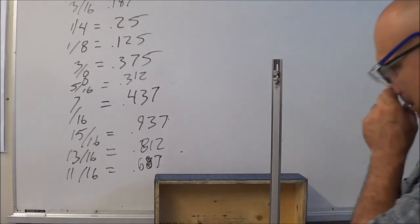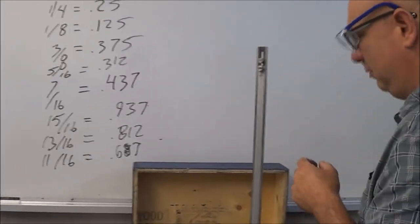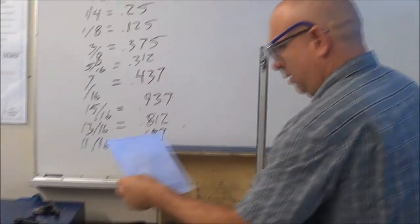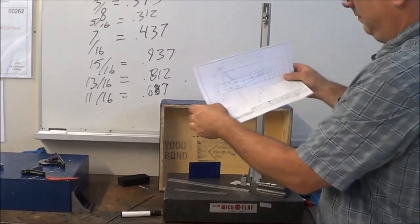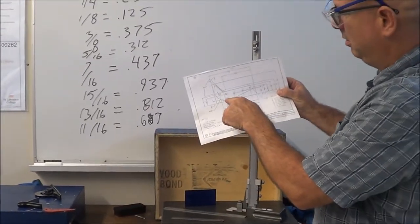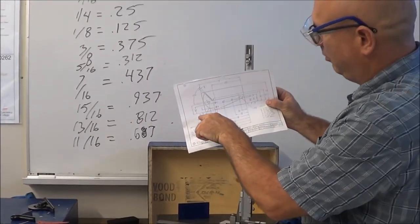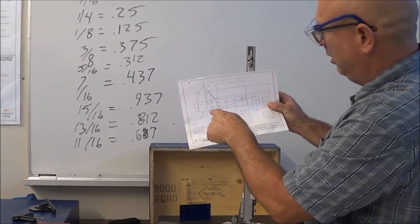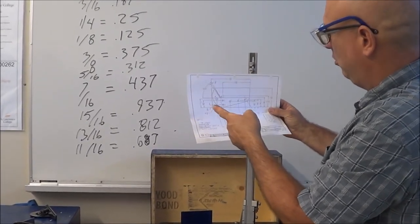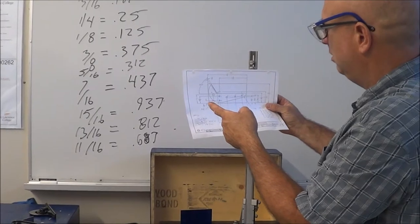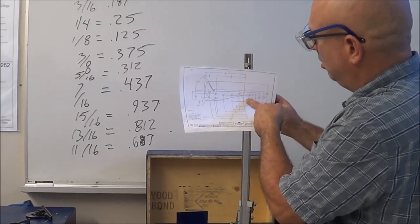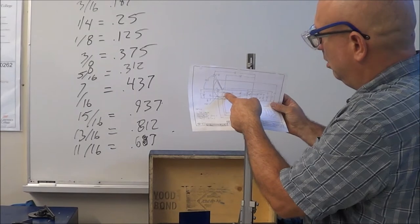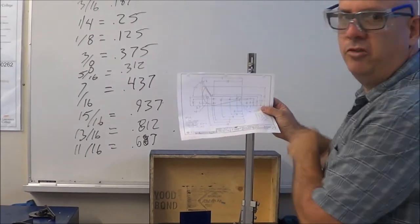Come over to my part. Now, I saw on hole D, decimal 312, which is five sixteenths, but our distance to that hole is going to be, let's see, from this edge, three and a quarter inches.